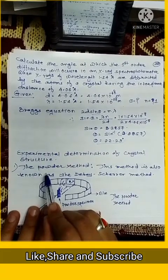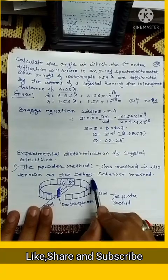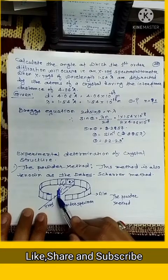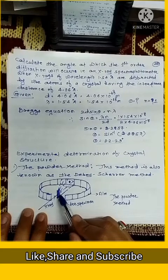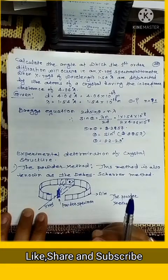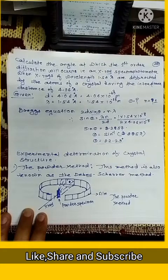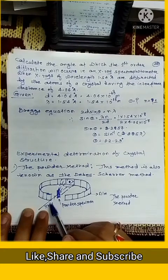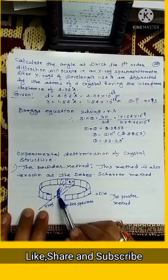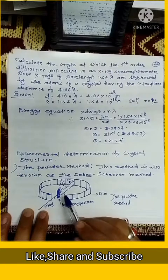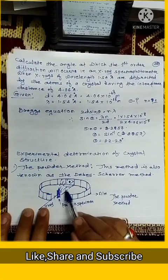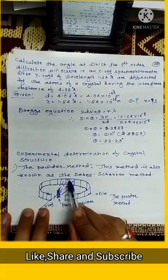First method is the powder method. This method is also known as Debye-Scherrer method. In this method, a monochromatic beam of X-ray is passed through a powder of your sample which contains crystals of your compound. When this X-ray is passed through this capillary which contains crystals of your sample in powder form, the X-ray then scatters on a plane and you get a circular pattern.